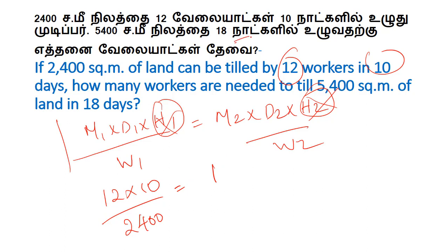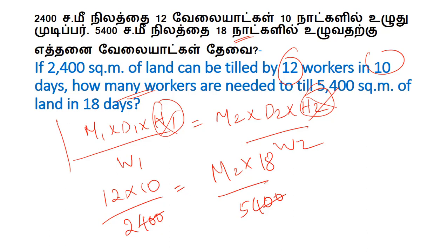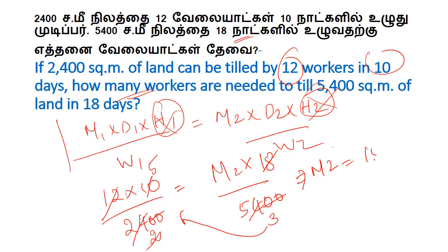So this is the formula. The number of men M2 is what we need to find. We will cancel: 2 cancels and then 3 cancels. After canceling, M2 gives us 3, and 5 divided by 3 gives 15.